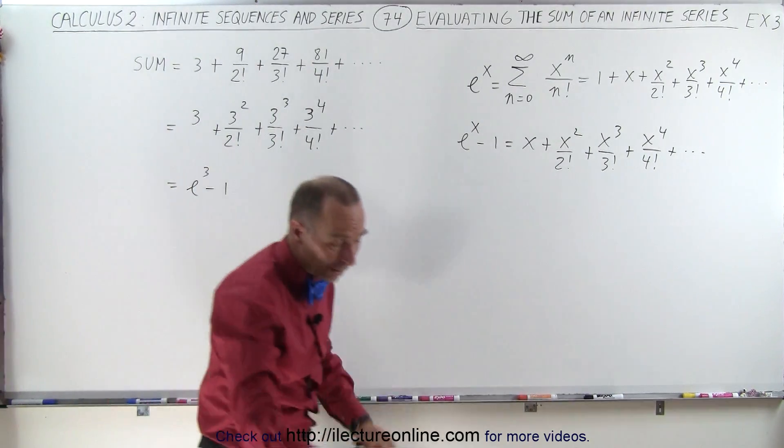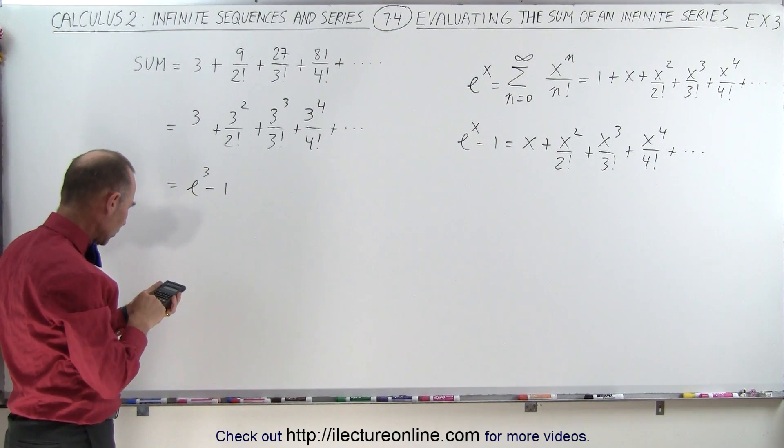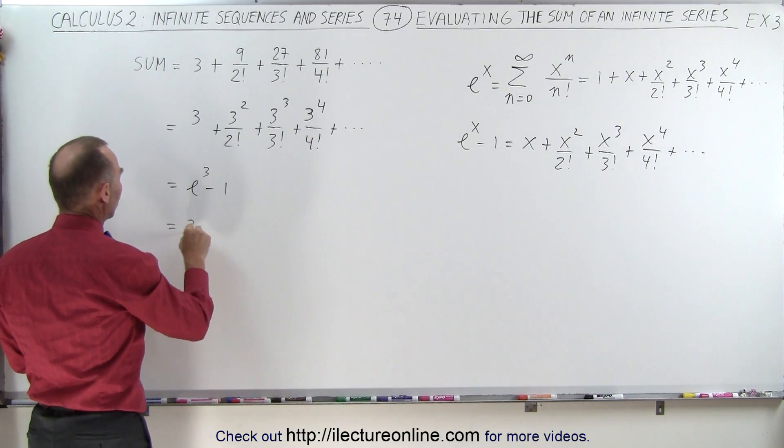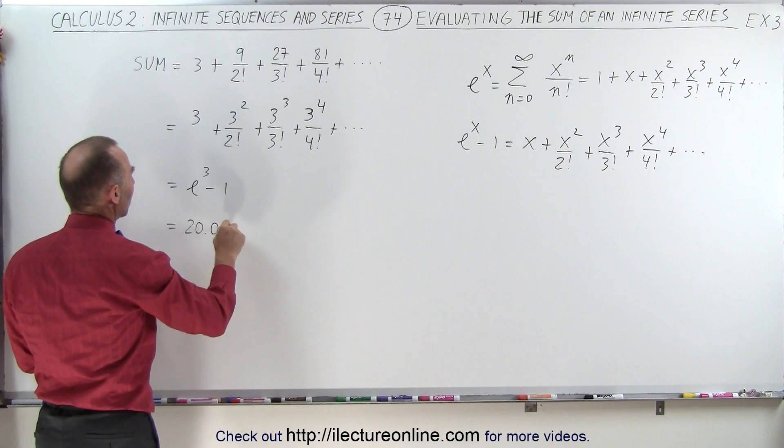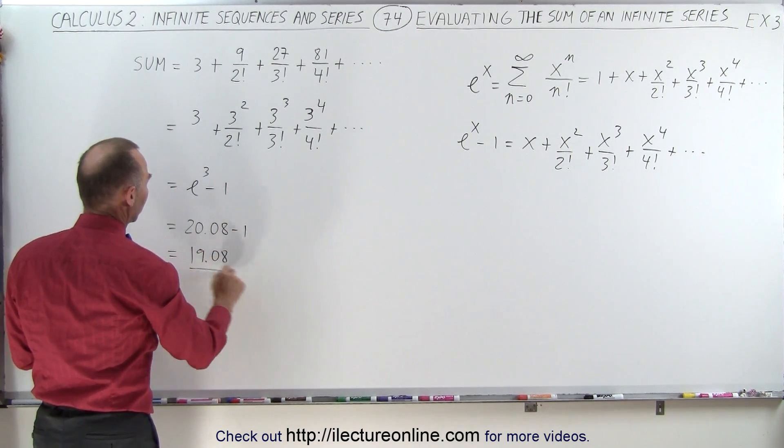Okay, evaluating that, well all we need is the calculator now and so e to the third power is 20.08 minus 1, so this would be equal to 20.08 minus 1 which is equal to 19.08 to two decimal places.